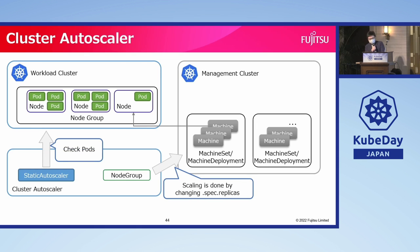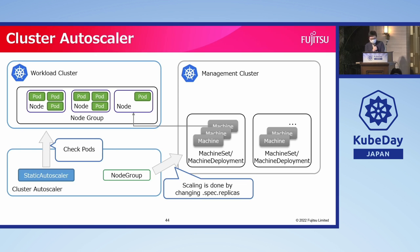With Cluster API as the cloud provider, a node group is actually a MachineSet or MachineDeployment object, and the scaling job is done by changing the replicas field in their spec. Because the Autoscaler needs to check pods running on the workload cluster and also modify the MachineSet or MachineDeployment on the management cluster, the Cluster Autoscaler needs access to both clusters.